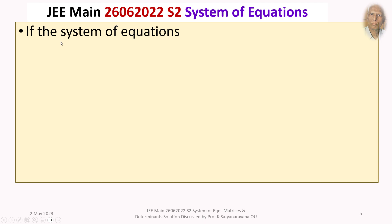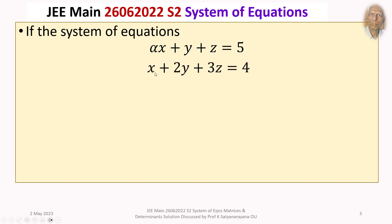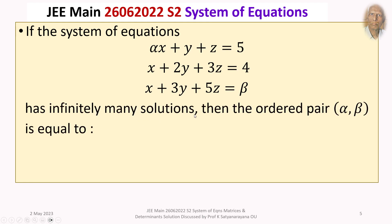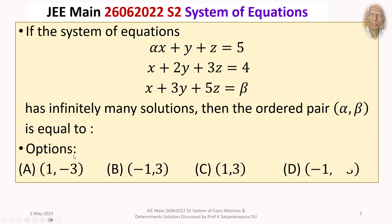The given question is: if the system of equations — alpha x plus y plus z equals 5, x plus 2y plus 3z equals 4, x plus 3y plus 5z equals beta — has infinitely many solutions, then the ordered pair (alpha, beta) is equal to? The four options are: (a) (1, −3), (b) (−1, 3), (c) (1, 3), (d) (−1, −3).